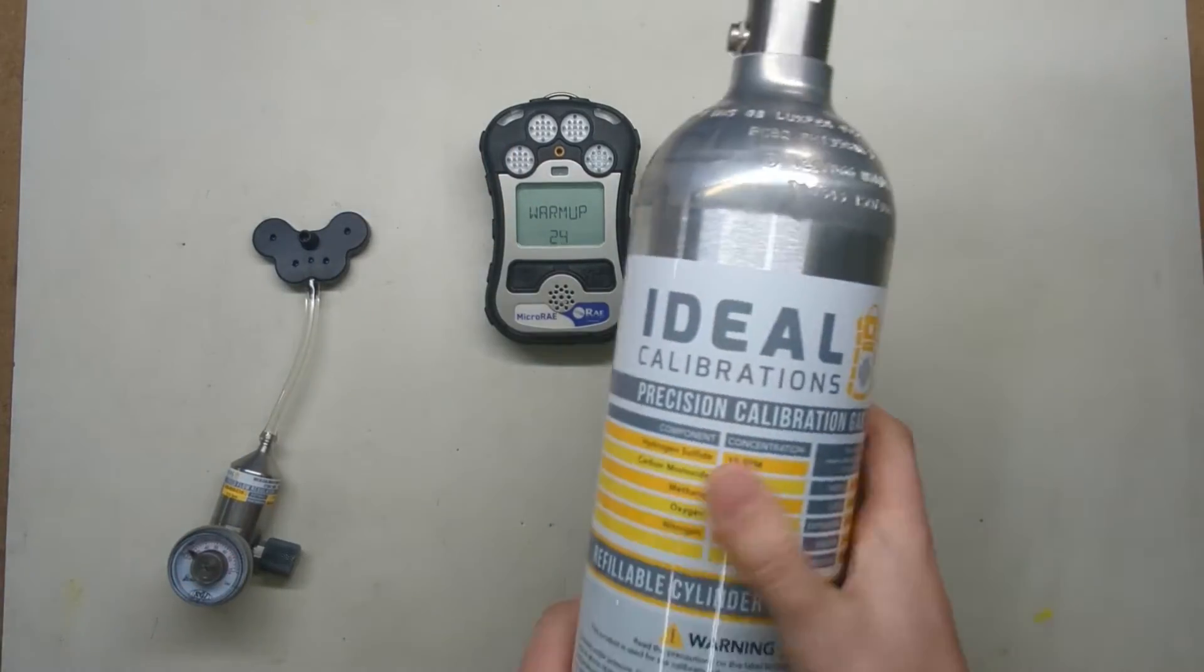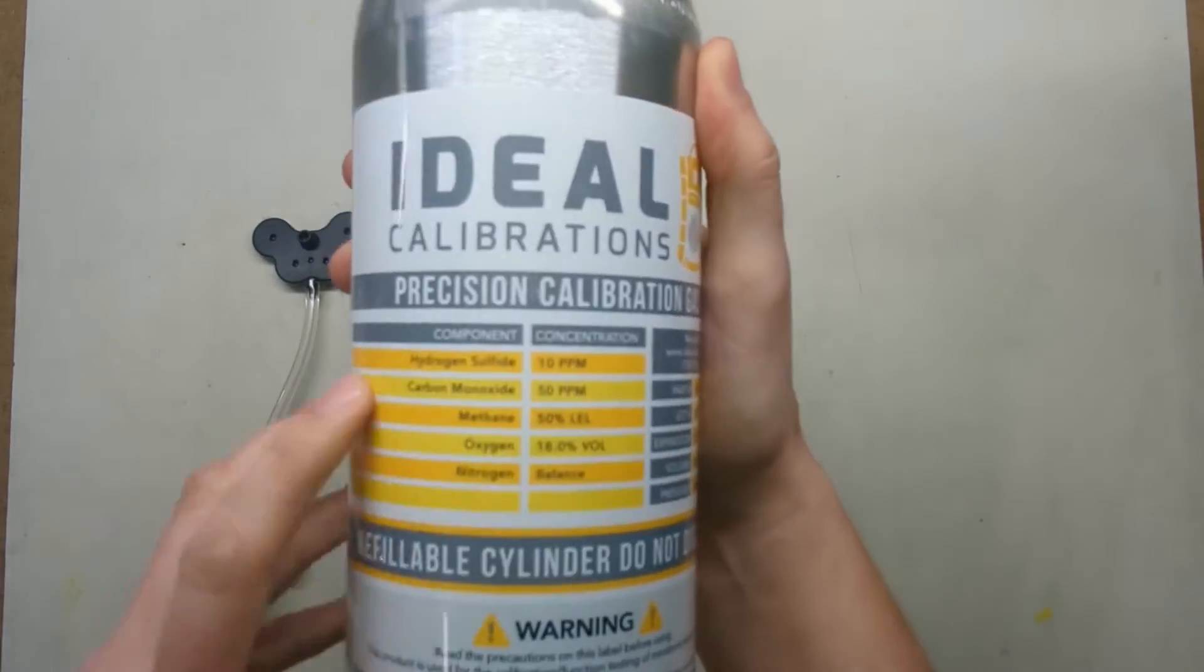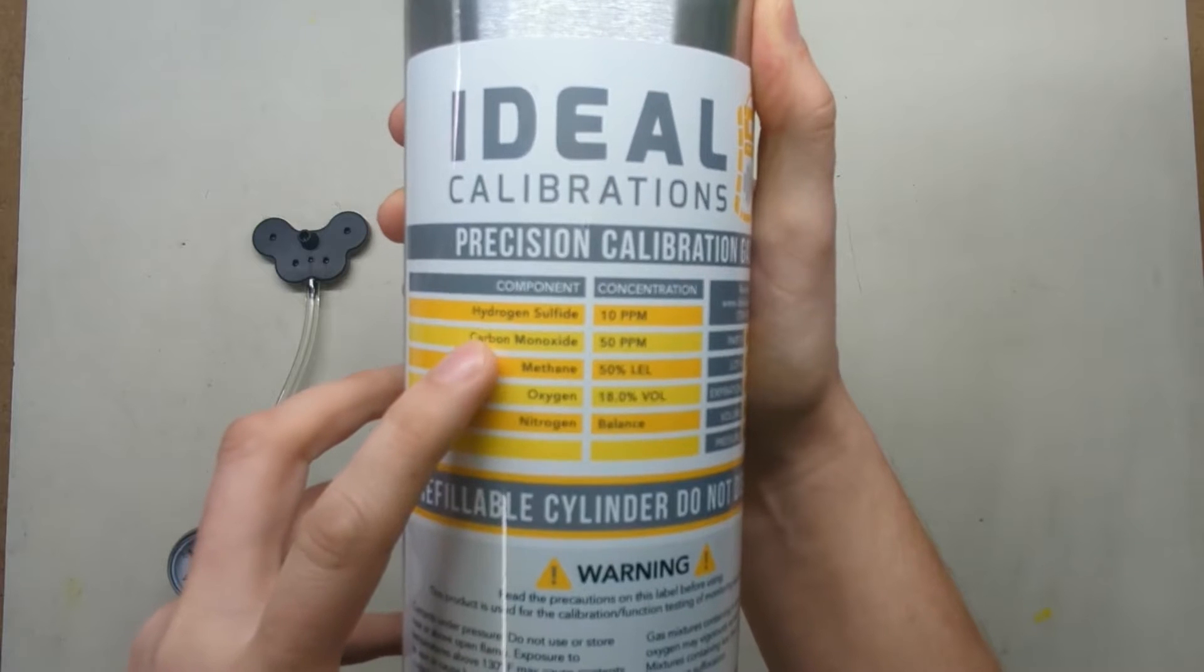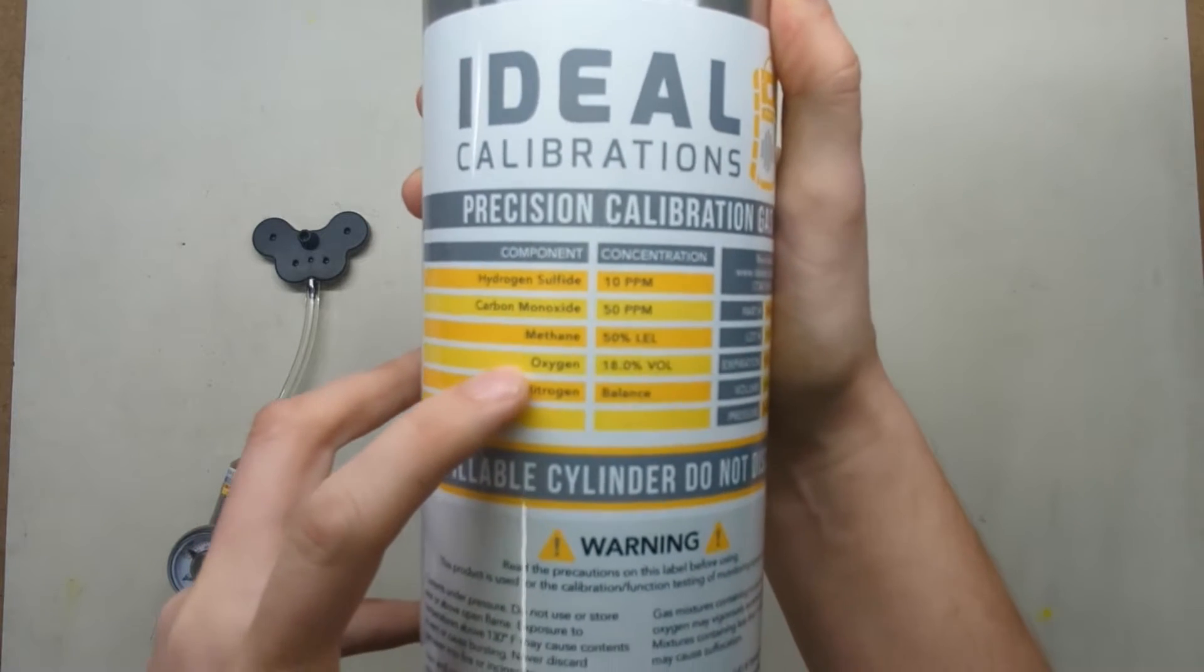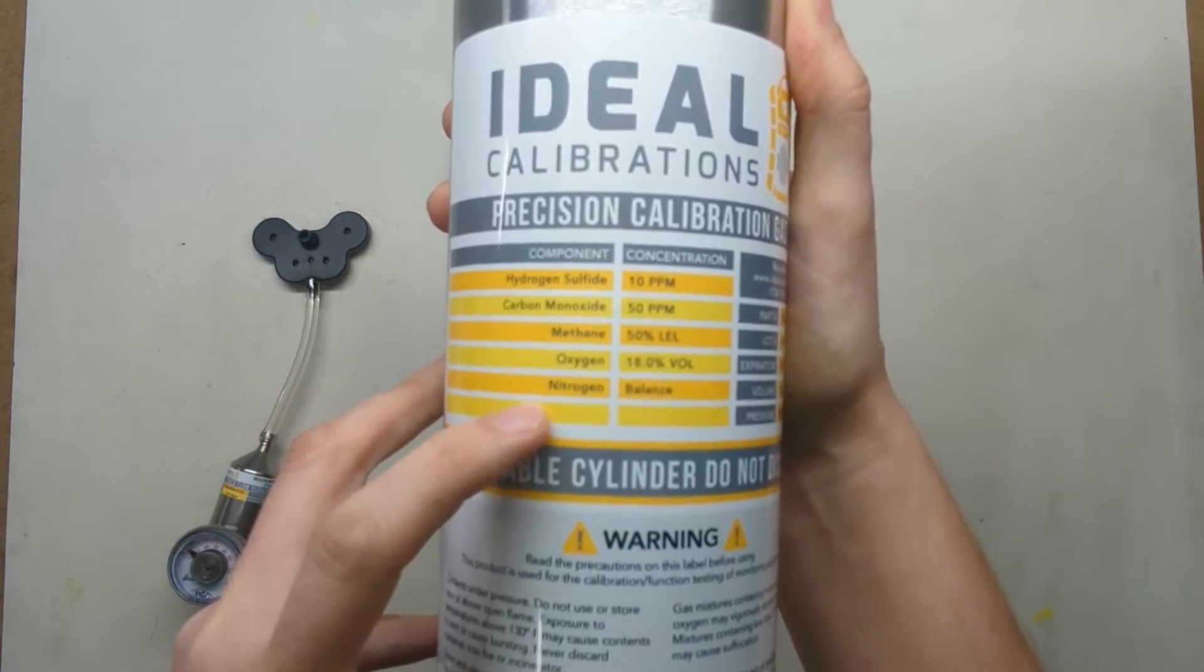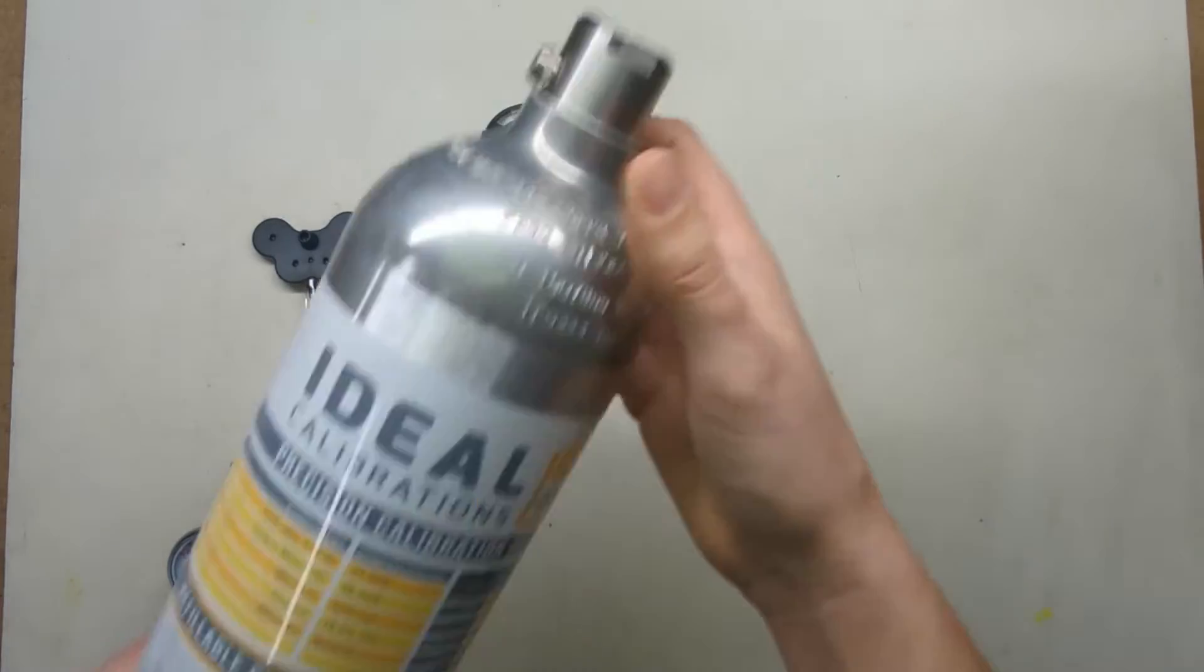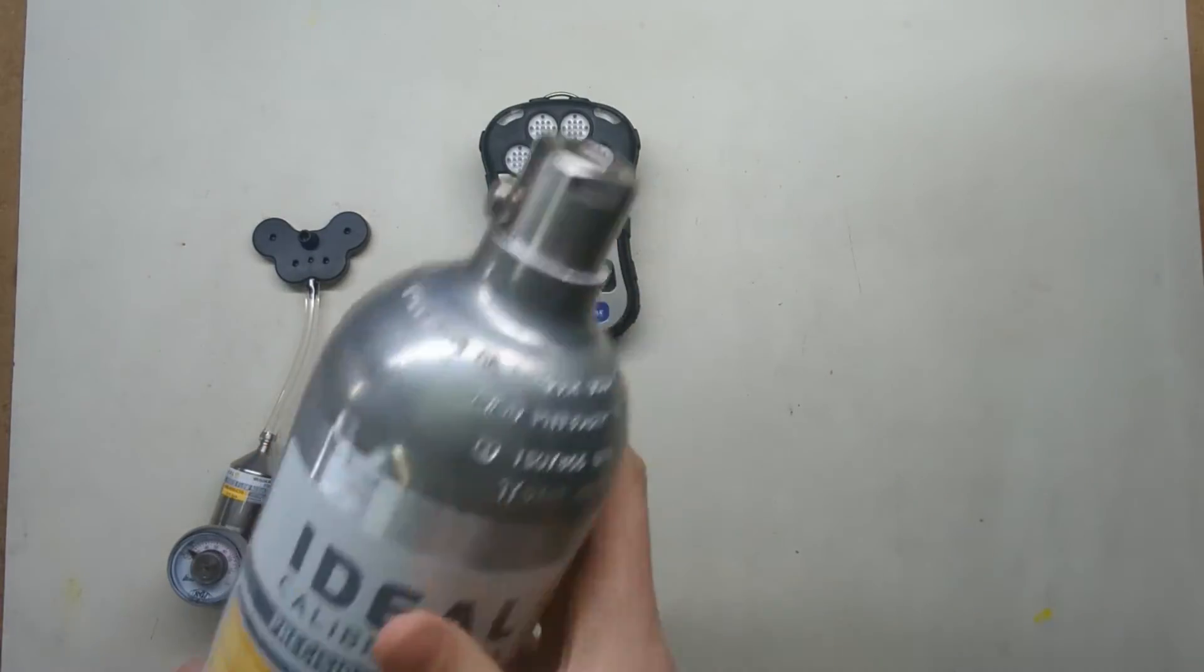Over here we have a cylinder of 10 parts per million hydrogen sulfide, 50 parts per million carbon monoxide, 50% LEL methane, and 18% oxygen with a nitrogen balance. You can see on the top it's a C10 fitting as well.